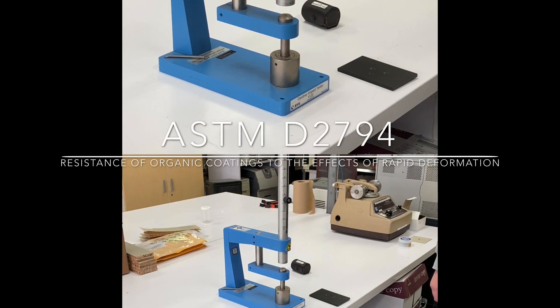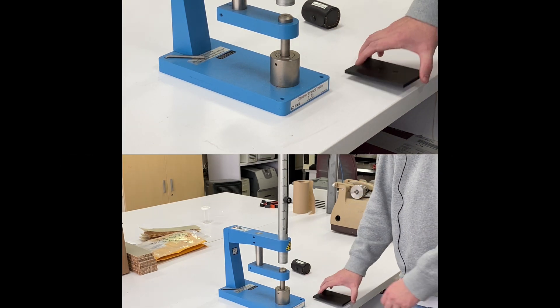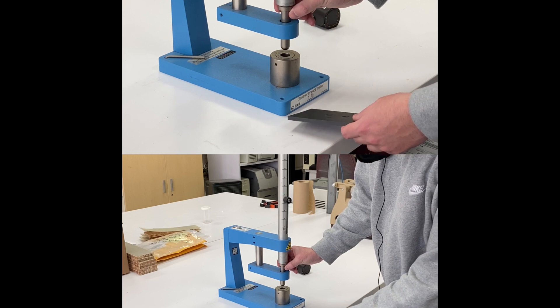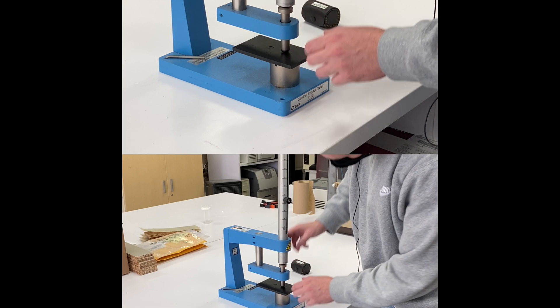Okay, this is the governor impact tester. You have a weight like this. So first, we're going to make the zero.